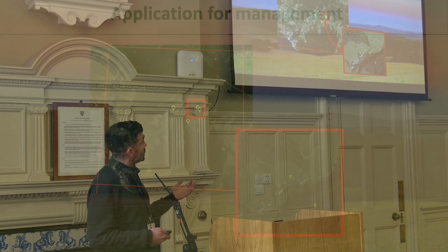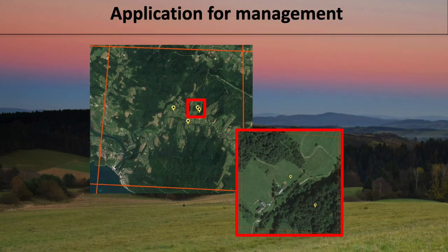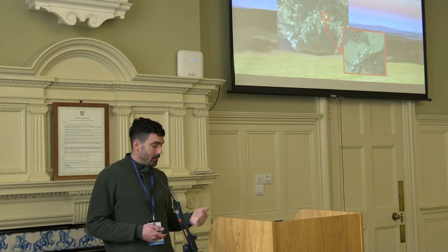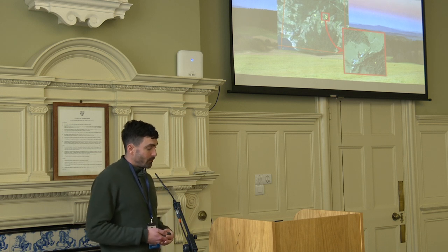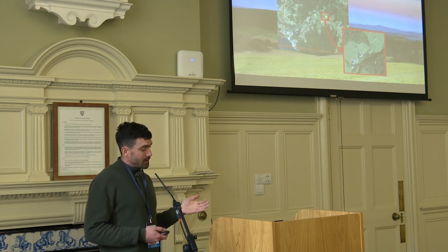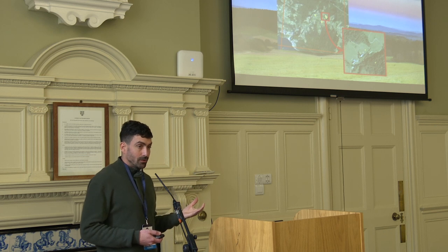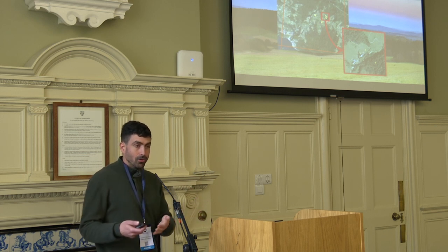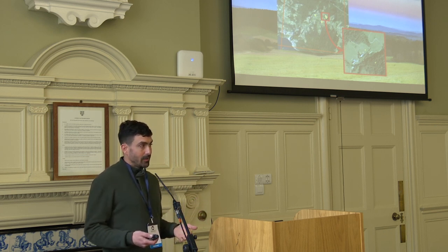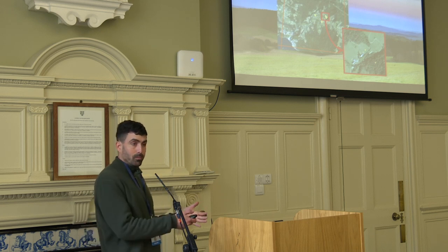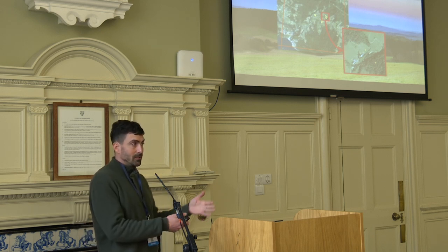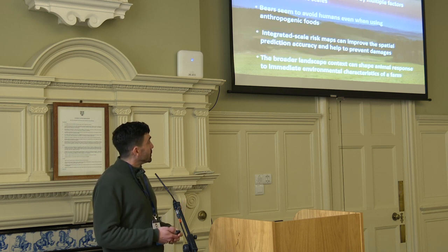This is good for management — not only can we identify which areas are more vulnerable, but we can give direct information to beekeepers. For instance, there is an 81% decrease in damage risk when apiaries are surrounded by 20 houses compared to zero houses. If beekeepers don't have the means to install electric fences, they can use this information to place their apiaries in locations that reduce damage probability.